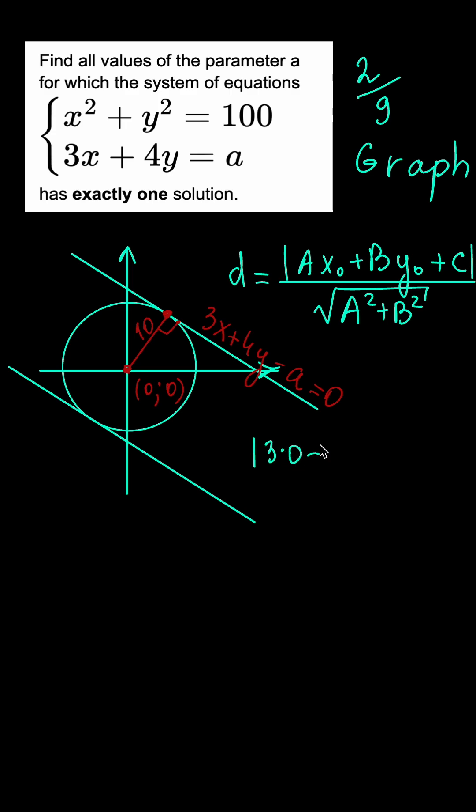We have the absolute value of 3 times 0 plus 4 times 0 minus A divided by the square root of 3 squared plus 4 squared. And let's set it equal to 10, yielding the absolute value of minus A equals 5 times 10 or 50. So A equals plus or minus 50.